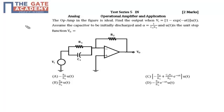Hello friends, this question is from test series 5, from the subject of analog. The topic name is operation amplifier and applications. In the circuit we have given one ideal op-amp, and the input supply voltage is equal to 1 minus e^(−αt) · u(t), where α = 1/(C1·R1). We need to find the expression for output voltage.